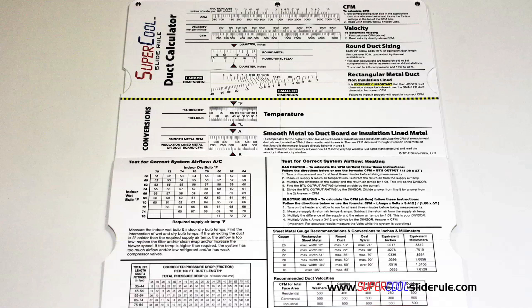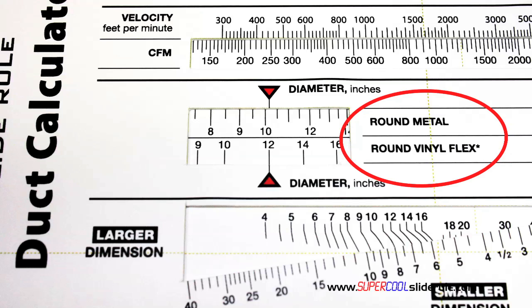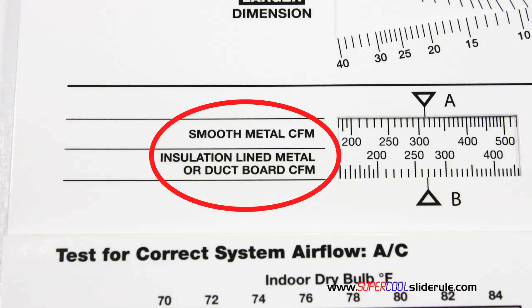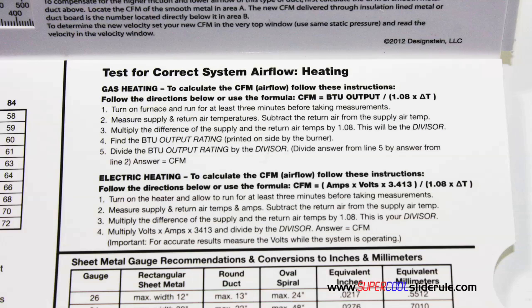Inside is packed with even more information. It performs sizing of both metal and flexible duct. It has the only direct reading conversion from smooth metal to insulated line metal we've ever seen. The majority of technicians have never been taught that if the insulation is on the inside of the ductwork, you cannot size it with a regular duct calculator. It has step-by-step directions for determining airflow through a gas furnace, electric furnace, or an air conditioning unit.